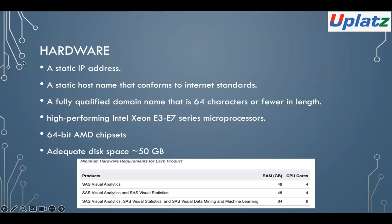For hardware, we need to use a dedicated host for the SAS Viya platform deployment. The target machine must have a static IP address — after deployment, this IP address cannot be changed because it sits in all configuration files. A static hostname that conforms to internet standards is also required, as it cannot be changed post-deployment. Additionally, a fully qualified domain name of 64 characters or fewer is required, related to the TLS implementation's 64-character limit for the common name (CN) attribute in certificate revocation lists.